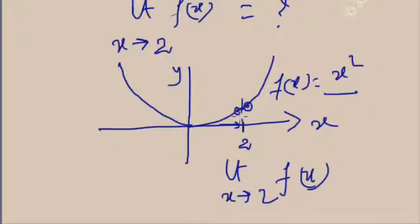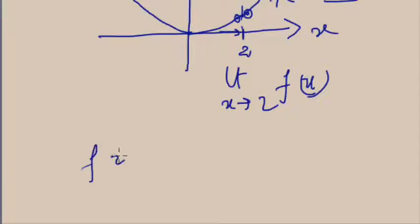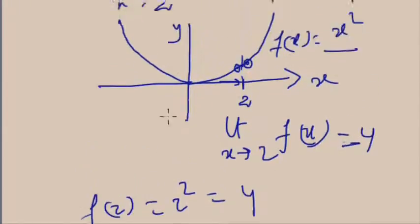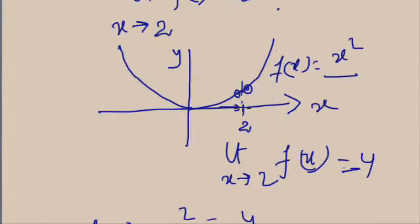From the graph you see that the value near x = 2 — f(2) = 2 squared = 4. This means the limit as x tends to 2 of f(x) is equal to 4. From the graph it is clear that near the point f(2), the value is around 4 — it is slightly less than 4 on one side and slightly more than 4 on the other side. So when x is just near to 2, the value of f(x) will be 4.